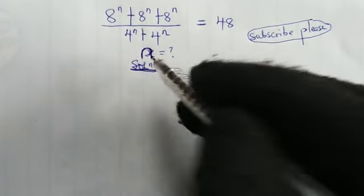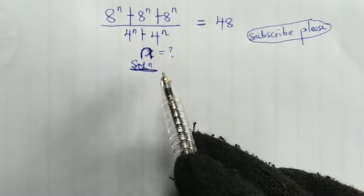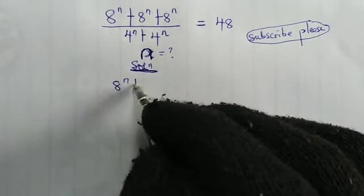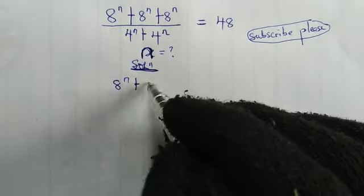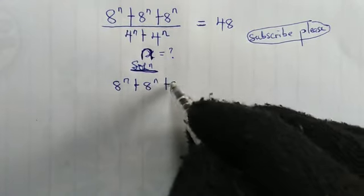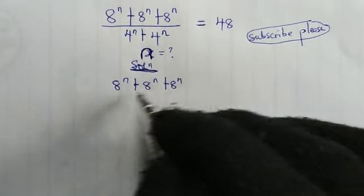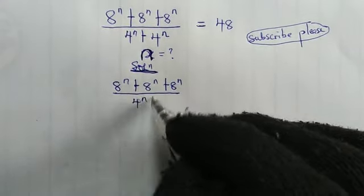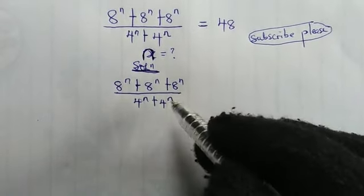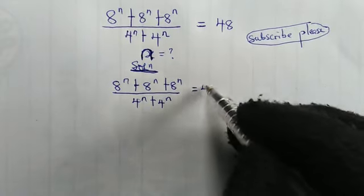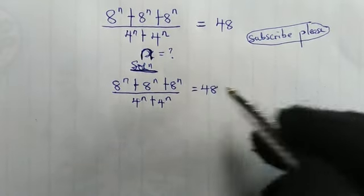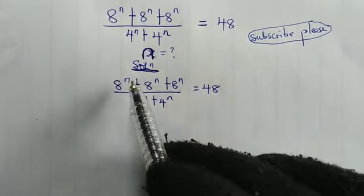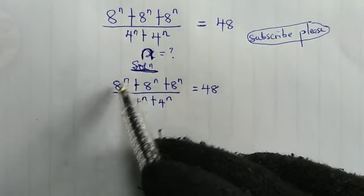Sorry for the x here. So we have 8 to the power of n plus 8 to the power of n plus 8 to the power of n, all over 4 to the power of n plus 4 to the power of n, and this is equal to 48.